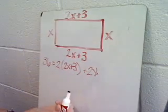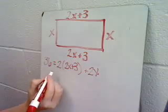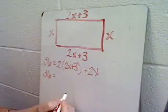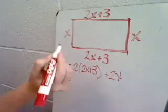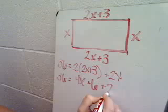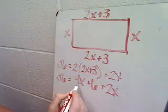Now I'm going to solve my equation to get the width of the rectangle. Using the distributive property, I'll eliminate the parentheses. 2 times 2X is 4X. 2 times 3 is 6. I'm going to combine the like terms now.